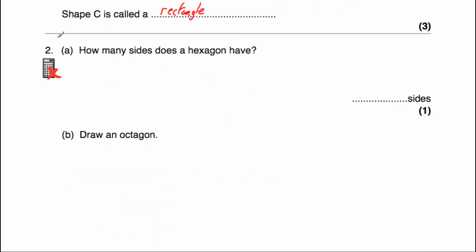Question number two, part A says: how many sides does a hexagon have? A hexagon has six sides. The way I remember is the word 'six' — the number six has got the letter X in it, and so does the word hexagon. So it has six sides.